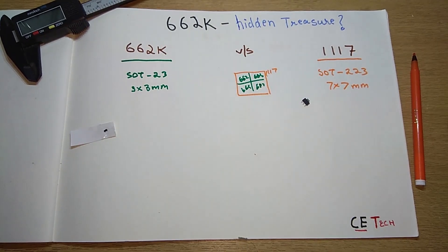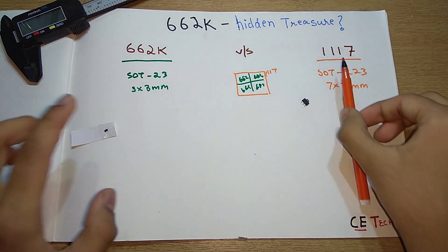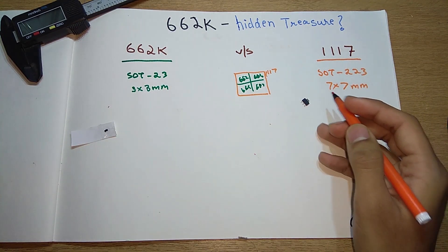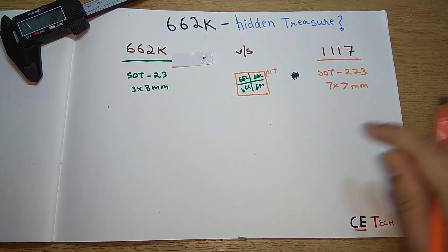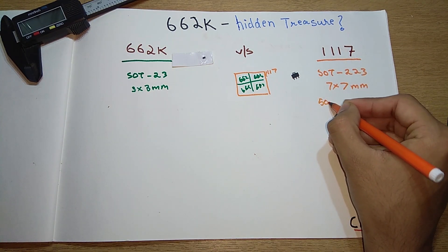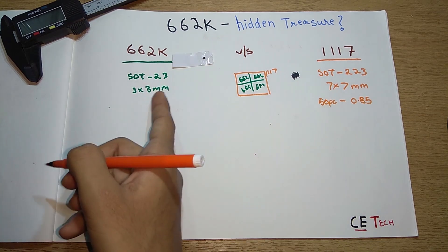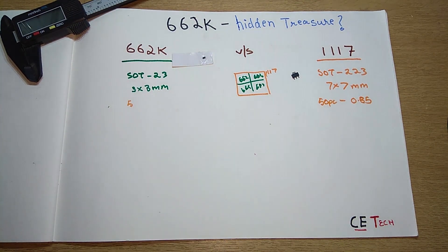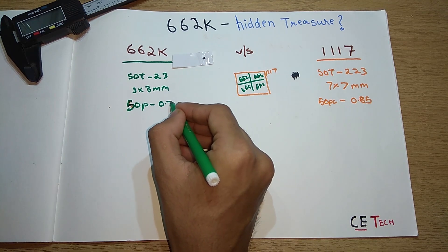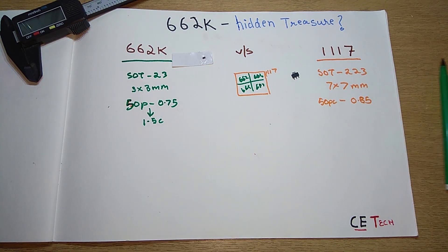Coming to the cost factor: the 1117, if you buy approximately 50 pieces from any Chinese vendor or AliExpress—I'll mention the links in the description—will cost you around 85 cents. For this one, 50 pieces will cost you around 75 cents. Per piece, this costs around 1.5 cents and this costs around 1.7 cents. That's not much of a difference.